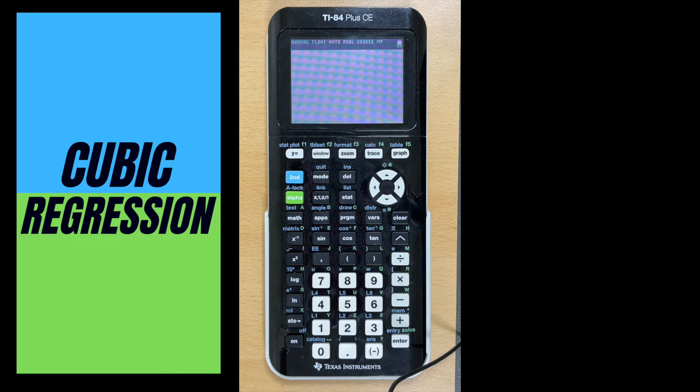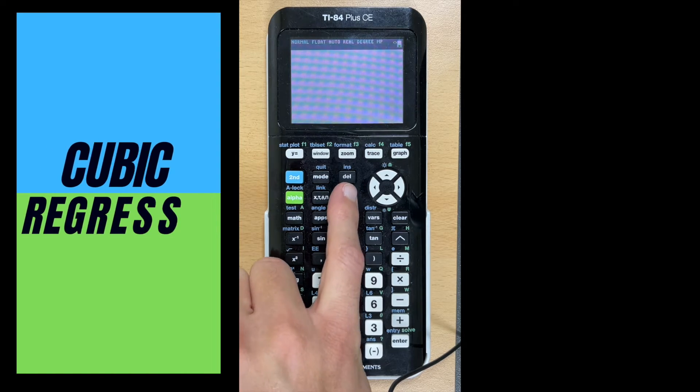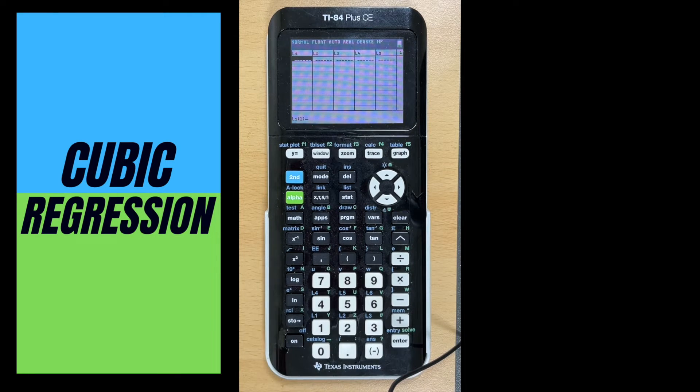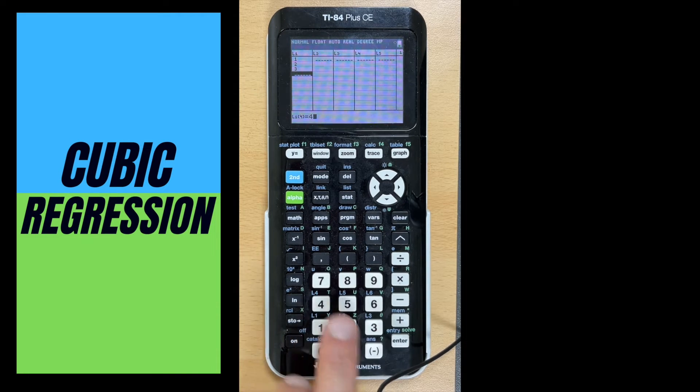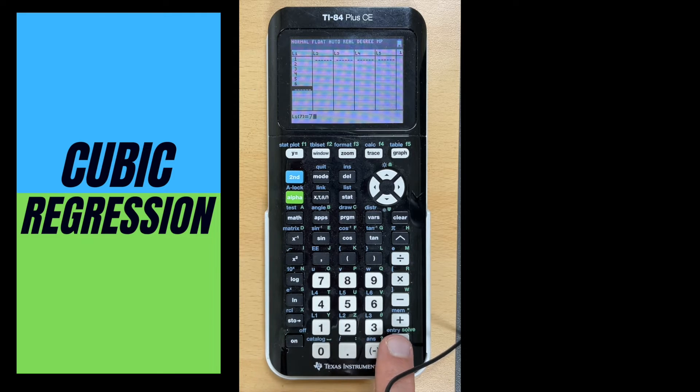In order to do this, we need a data set. I'm going to go into stat, and for edit we're going to hit enter. For L1, we're going to type in our x values. For this example, I'm going to type in 1 through 7. So 1, enter, 2, enter, 3, 4, 5, 6, and 7.